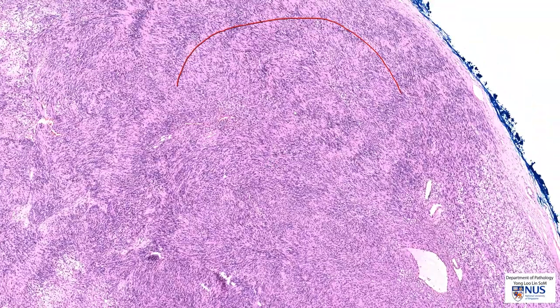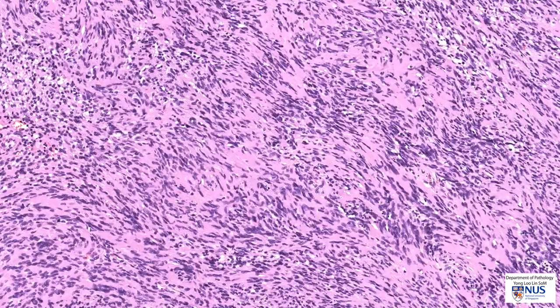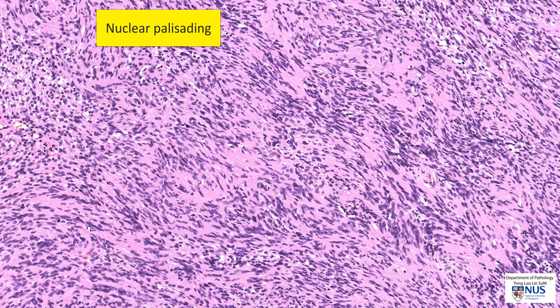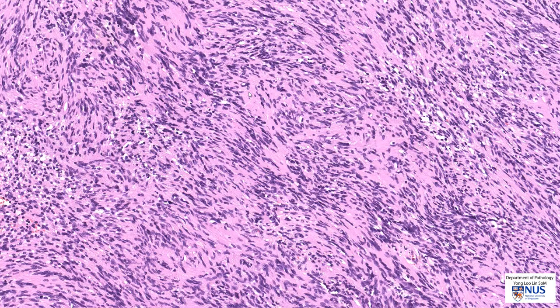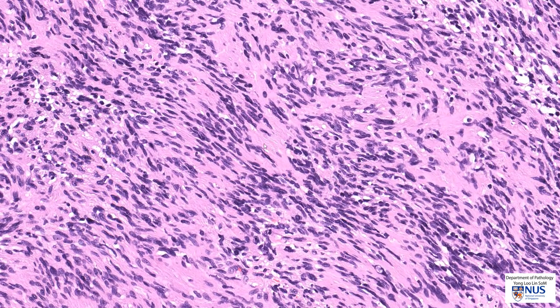In some areas, you'll notice that the nuclei tend to line up, and this is known as nuclear palisading. Here again, the nuclei are lining up. When we see several nuclear palisades — one row here and another row here — separated by fibrillary pinkish material, this is known as a Verocay body.